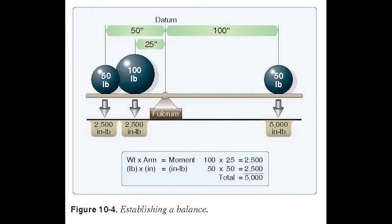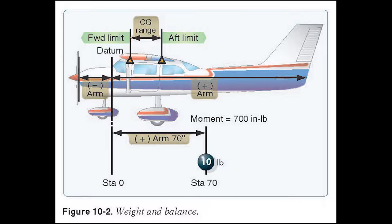The datum point, or the fulcrum of that teeter-totter, is where all of our distances are calculated from to determine where the weights are on the airplane. In figure 10-2 here, you see how the CG range might be. It looks a little bit wide for a real airplane. A real airplane would be a bit narrower than that, but for illustrative purposes they have to make it wide enough that you can read it.